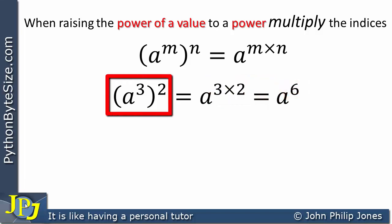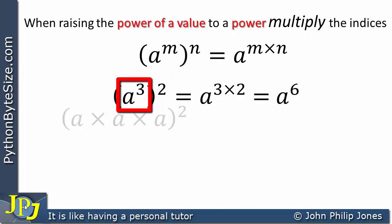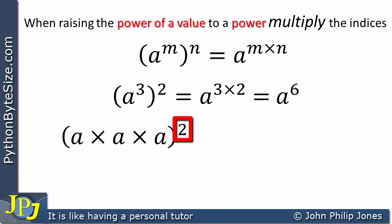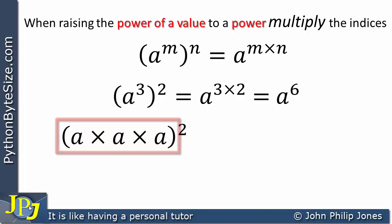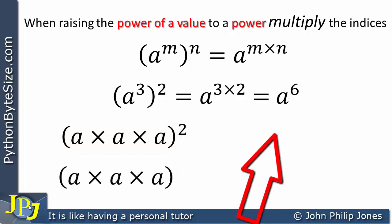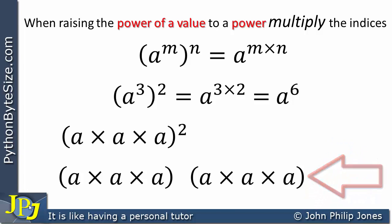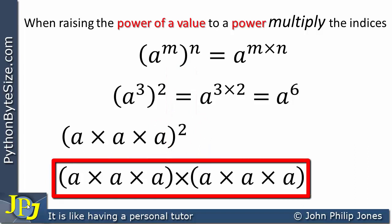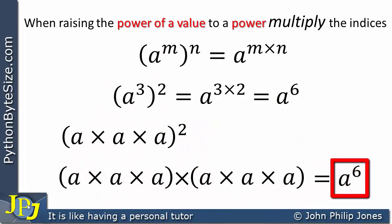I'm going to rewrite this below by expanding the contents of the brackets. I have 3 lots of a's all multiplied together, and outside the brackets you can see the 2, indicating that the contents of the brackets are squared. This 2 tells us we have 2 lots of the brackets multiplied together. Here is 1 lot of the brackets, here is another lot, and we multiply them together. You can see there are 6 a's all effectively being multiplied together.